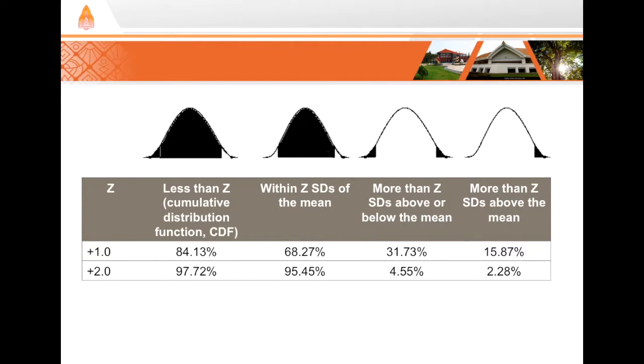The z-score allows us to look at where our observation occurs along the standard normal curve that I showed you earlier. Using that, we can see the area under the curve and make inferences about that data point. We do this using tables that are available in textbooks, they're available online, and they might look like what I'm showing here.